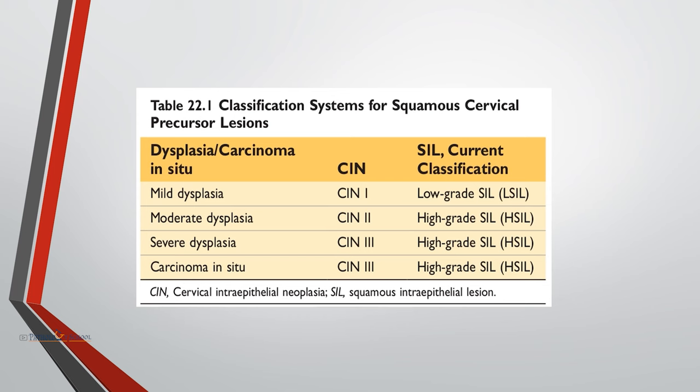The classification of cervical precursor lesions has evolved over time. Initially there was a three-tier classification system which has recently been simplified to a two-tier classification system, in which CIN1 was renamed as low grade squamous intraepithelial lesion, and CIN2 and CIN3 were combined into one category referred to as high grade squamous intraepithelial lesion.